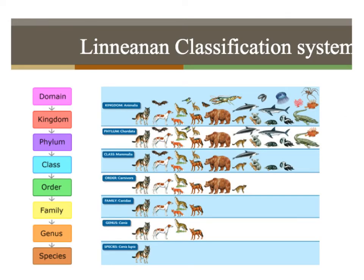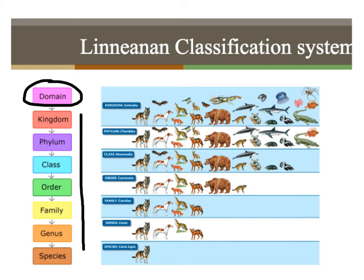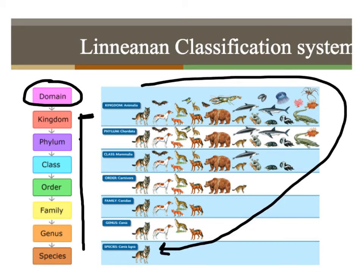Here is our Linnaean classification system. Kingdom, phylum, class, order, family, genus, species. Remember that domain is at the top — that is the biggest group. You can have domain eukarya, domain bacteria, or domain archaea. This diagram shows the classification of one of my favorites, the gray wolf — Canis lupus — its genus-species name. The genus name is capitalized and shown in italics, while the species name is all lowercase.